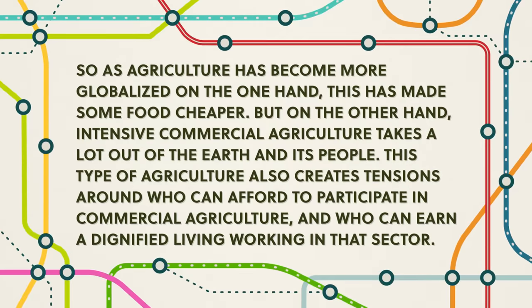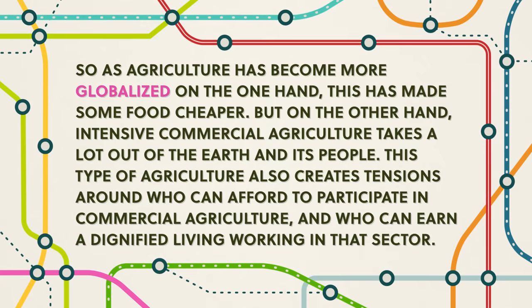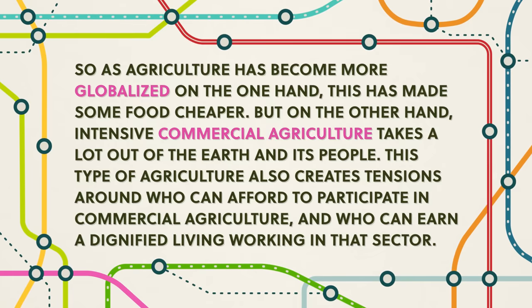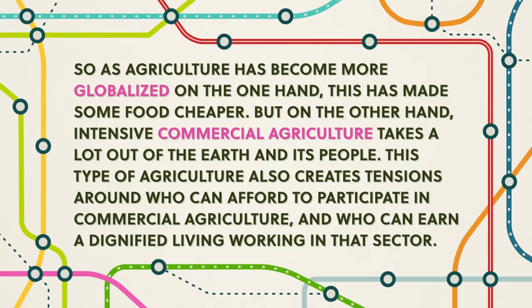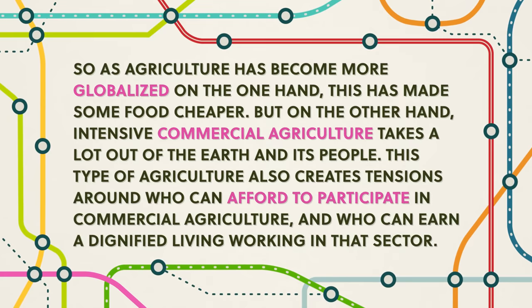As agriculture has become more globalized, this has made some food cheaper. But on the other hand, intensive commercial agriculture takes a lot out of the earth and its people. This type of agriculture also creates tensions around who can afford to participate in commercial agriculture, and who can earn a dignified living working in that sector. From the colonial plantations of the 1700s to today, labor is still the hidden cost in agriculture. Small-scale agriculture is often seen as hard and risky, with industrial agriculture being seen as more profitable. But in both cases, those doing the labor are often in precarious positions.